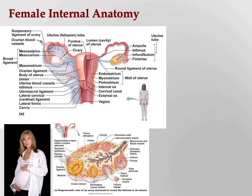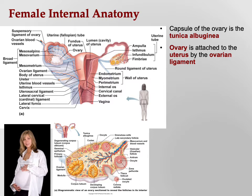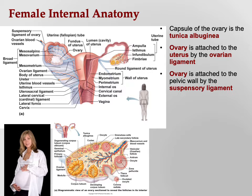Female internal anatomy. The capsule of the ovary is enclosed in the tunica albuginea — remember the white shirt. The ovary is attached to the uterus by the ovarian ligament. This is just a ligament, not where the egg is traveling; it's a piece of connective tissue to hold the ovary in place, maintaining the right orientation between the ovary and uterus.